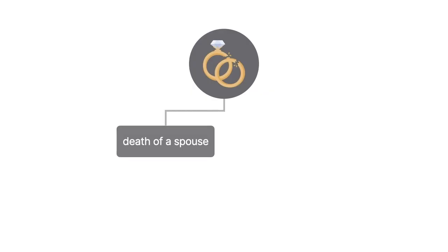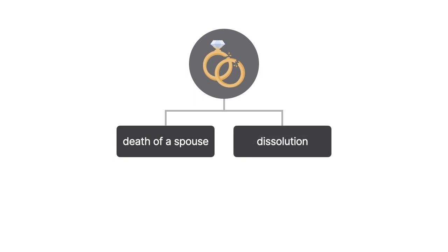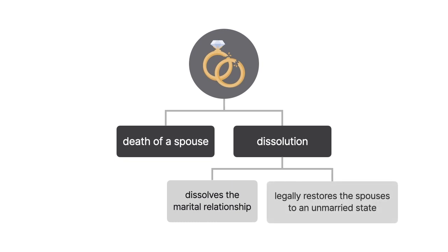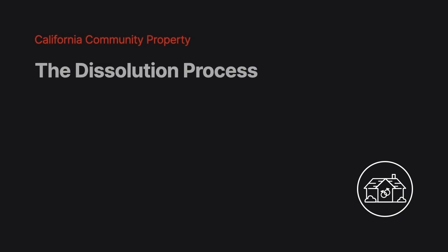There are two common ways in which a marriage legally ends: the death of a spouse and dissolution. Dissolution, more commonly referred to as divorce, dissolves the marital relationship and legally restores the spouses to an unmarried state. In this video, we'll explore the dissolution process.